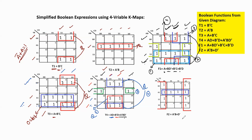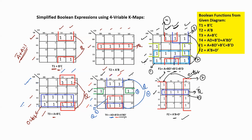For f2, there is one pair and one eight-ones group. The pair lies in one row (a=0, b=1 giving a'b), all columns so c, d skipped — giving a'b. The eight-ones group lies in all rows (a, b skipped), c varies (skipped), and d=0 columns giving d'. Therefore f2 = a'b + d'.